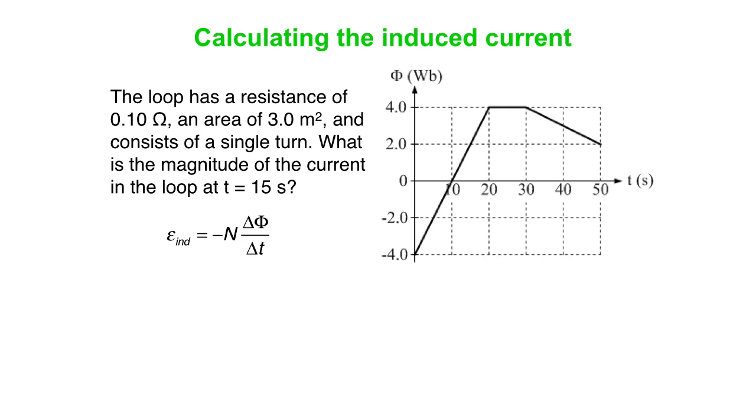We get the induced voltage minus n delta flux over delta t. So n equals 1, we have a single turn. What's the slope? Well, the slope is, if I look at the 10-second period between t equals 10 and t equals 20, you get delta y there of plus 4 Tesla meters squared, plus 4 Webers in a 10-second period. Got a minus sign there. So you get minus 0.4 volts.